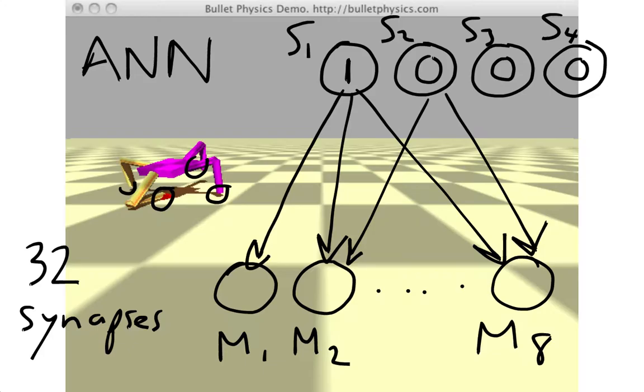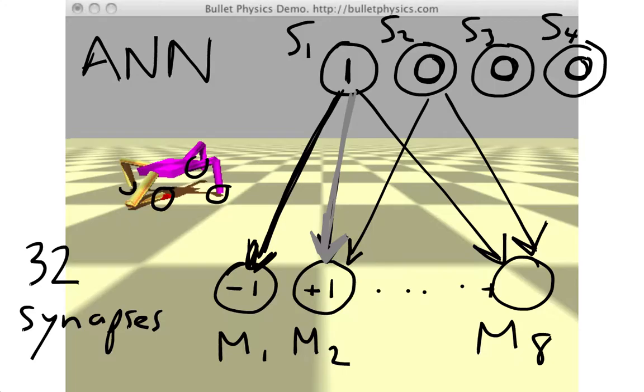So at this hypothetical time step, we have one of the touch sensors firing and the other three touch sensors not firing. Depending on the weights or the strengths and the type of connection—remember that a black arrow represents an excitatory connection and a gray arrow represents an inhibitory connection—we're going to compute values for our motor neurons. These motor neurons are going to take on values between minus 1 and plus 1, and we're then going to take these values and scale them to values in minus 45 to plus 45 degrees.